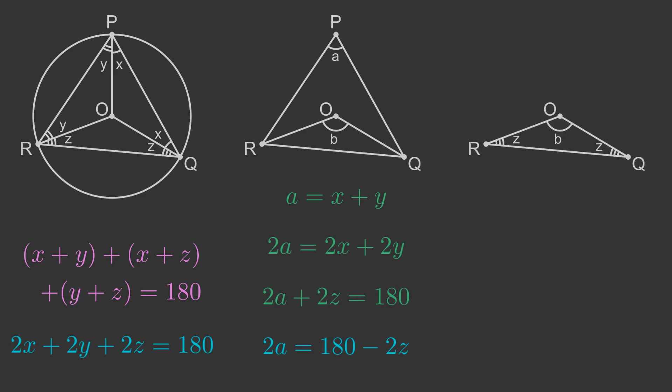Now we will look at the triangle RQO. The angle O has value B. The two base angles each have value Z. Since it is a triangle the three angles B plus Z plus Z add up to 180. So B is 180 minus 2Z. This is exactly the same equation for 2A. This proves that B equals 2A.